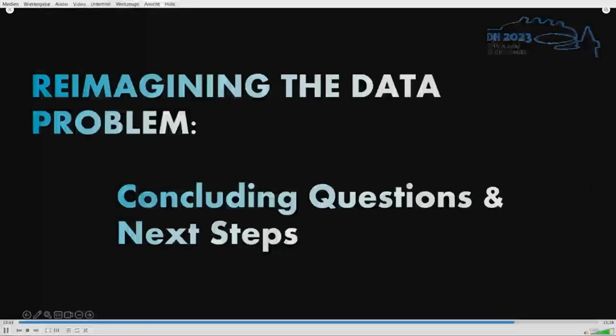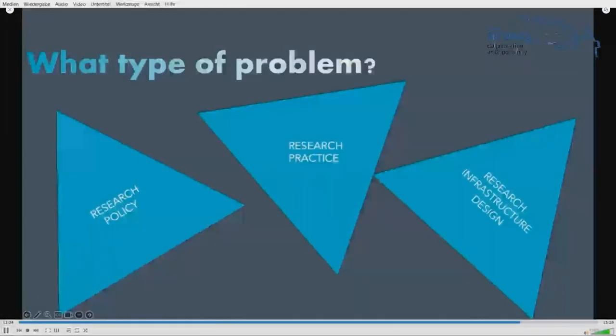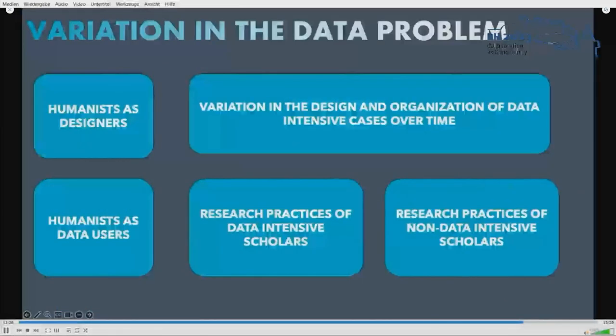Further directions in our research at Humanities Data Inquiry will continue to complicate the data problem along two fronts, one empirical and one practical. First, at the empirical level, we continue to develop our comparative studies of data-intensive research in the humanities, which we will begin to integrate with interview data in the coming year. Here, the goal is to understand the diversity of humanist expert agency by documenting for both analog and digital scholars their work and data practices.